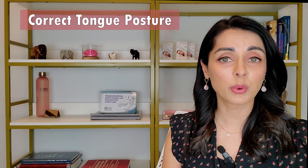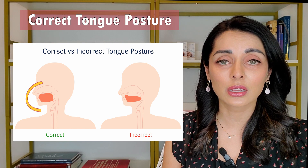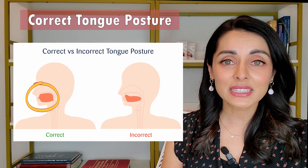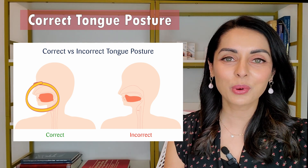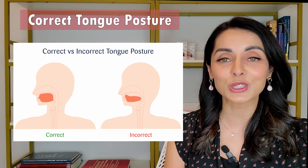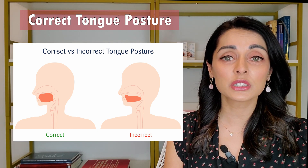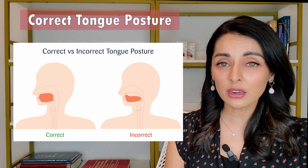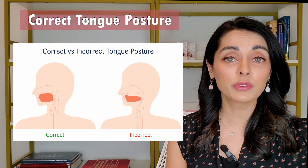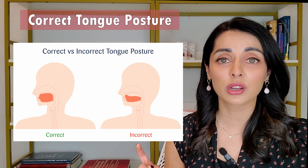Let's start by defining correct tongue posture. Correct tongue posture is when the entire tongue — the tip, the middle, and the back — is up against the roof of the mouth with a light suction. Do you have correct tongue posture? Check right now. If you're watching this video, your lips should be sealed and your tongue should be up against the roof of your mouth with a light suction. Is it floating around in the middle of your mouth? Is it down low on the floor of your mouth? Check where your tongue is when you're at rest, when you're not chewing or speaking. Comment below — I'd love to know.